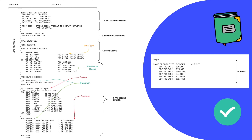Looking at the output — the employee name prints as 'Roger Murphy'. The first edit picture clause shows 129,956. The check amount is printed with a dollar sign and the actual amount. The date is formatted with forward slashes. In the fifth example, a plus sign is explicitly introduced — negative values display as minus and positive values display as plus. In the sixth example, two spaces appear between words in the output even though no spaces were provided in the program.